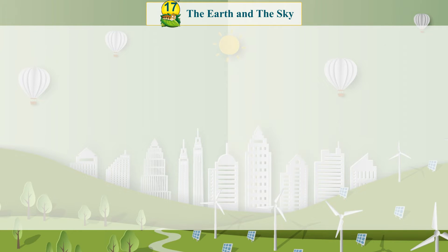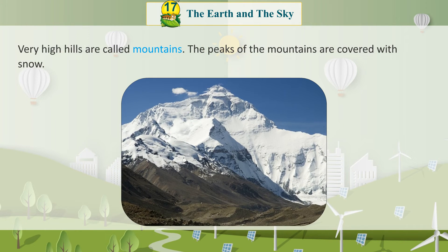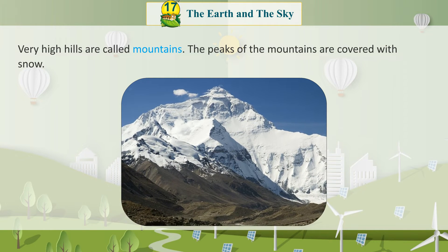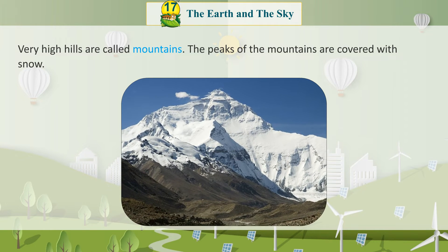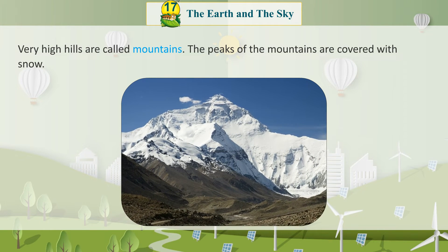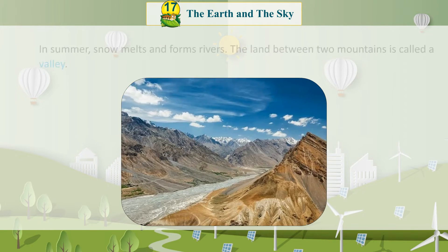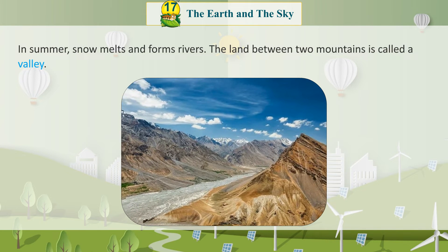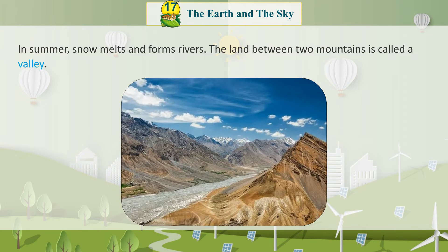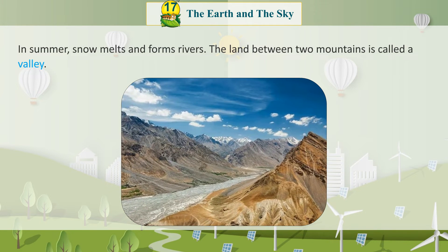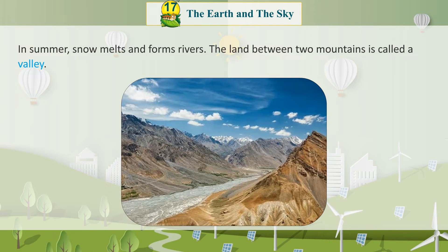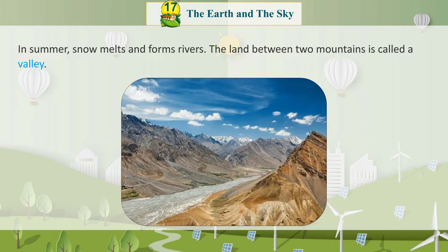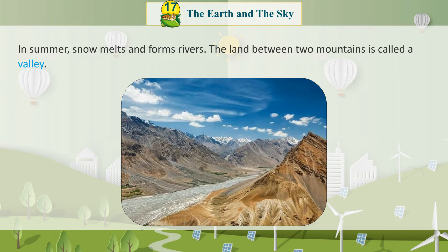Mountains: Very high hills are called mountains. The peaks of the mountains are covered with snow. In summer, snow melts and forms rivers. The land between the two mountains is called a valley.